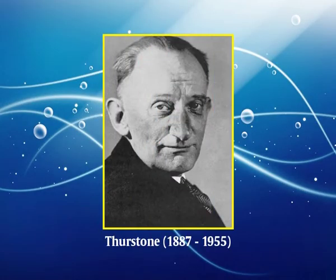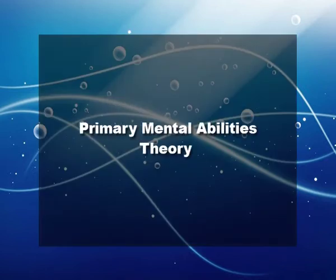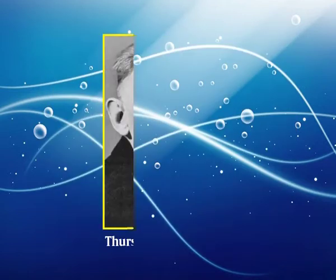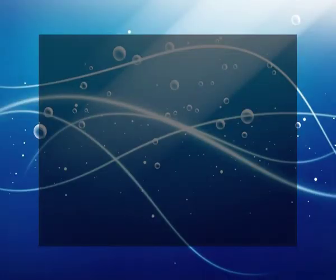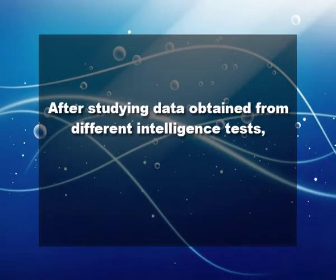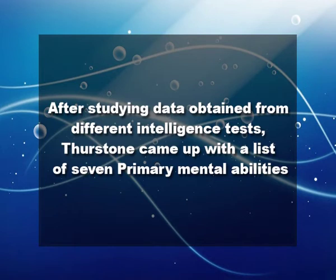Now we turn to another theory given by Thurstone (1887–1955), known as the Primary Mental Abilities theory. Thurstone, an American psychologist, more or less agreed with Spearman except on the concept of general intelligence, which he felt needed further exploration. After studying data obtained from different intelligence tests, Thurstone came up with a list of seven primary mental abilities. These abilities lie somewhere between general abilities and specific abilities.